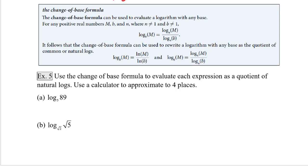Most of the time with our calculators we can't evaluate logarithms with bases other than ten or e. So we have a change of base formula that allows us to convert logs of any base into log base ten or log base e. The formula says: log base b of m, changed to base n, becomes log base n of m divided by log base n of b. To convert to natural log: log base b of m becomes the natural log of m divided by the natural log of the base. To convert to common logs: log base b of m becomes log of m over log of the base.